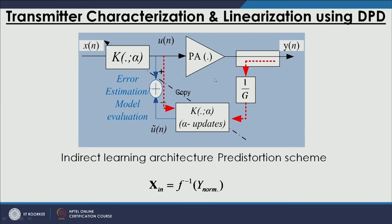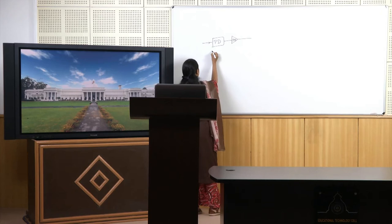The power amplifier is here; we apply our signal x(n) and we have one element in the digital domain which initially has gain 1. The output of this digital domain element is U(n). When there is no coefficient update, X(n) is equal to U(n), meaning the original signal is being applied directly to the power amplifier. The PA output is captured, and we remove its gain by dividing by the small signal gain G.